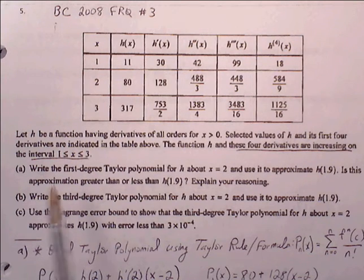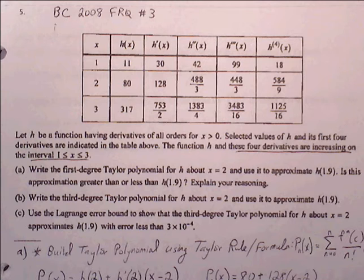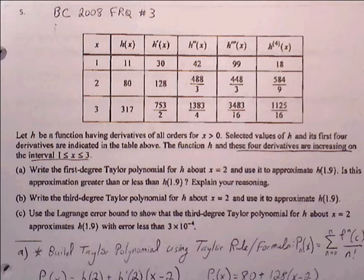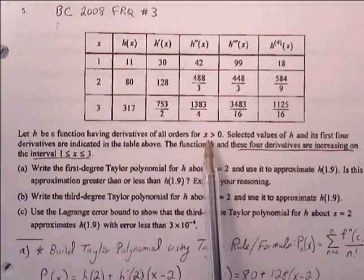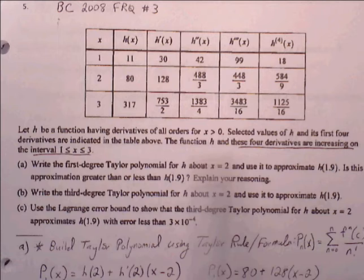Let's look at number 5 and 6 from this BC review packet number 2 on Taylor series FRQs. Number 5 says let h be the function having derivatives of all orders for all x greater than 0. Selected values of h and its first 4 derivatives are indicated in the table. The function h and these 4 derivatives are increasing on the interval from 1 to 3 — something important we're going to have to keep track of.